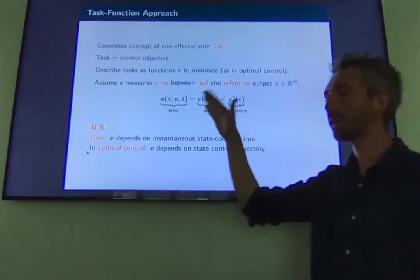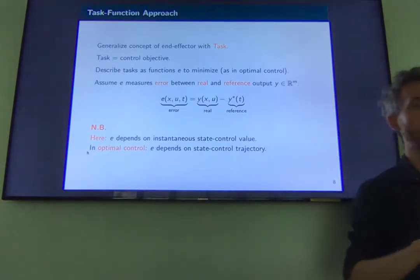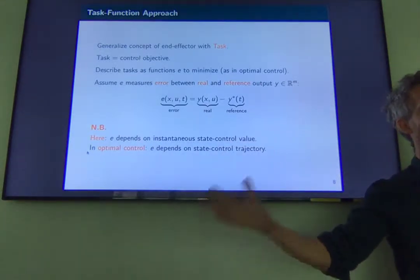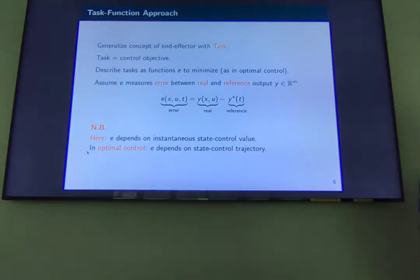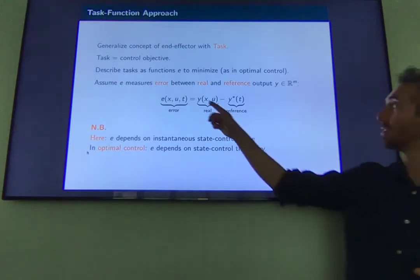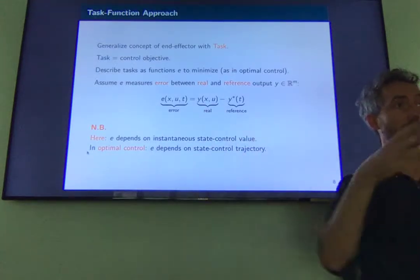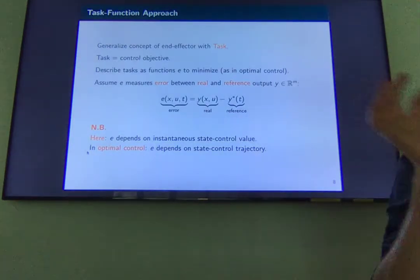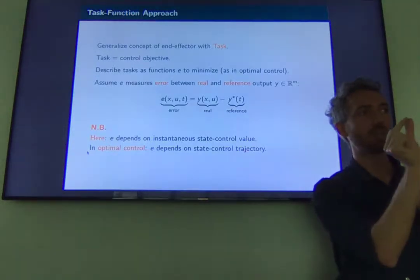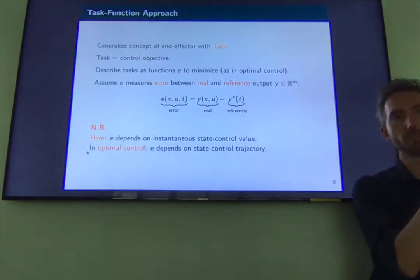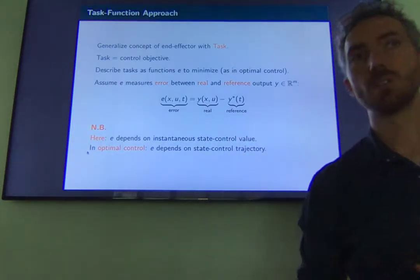You may see similarities between this and optimal control, but there is a crucial difference. In optimal control, the function you minimize depends on the whole trajectory of state and control — it's typically an integral over time. Here, y only depends on the instantaneous current value of x and u. There is no horizon; it's an instantaneous, reactive controller. You can think of this as optimal control when your horizon collapses to zero. There are also a couple of papers that prove this more formally.